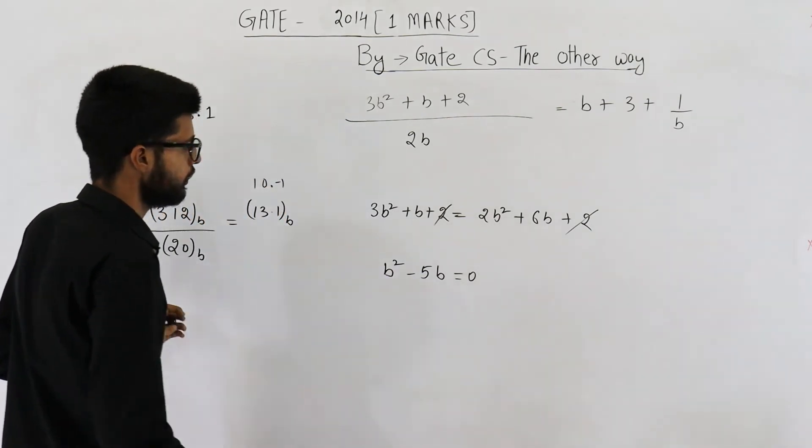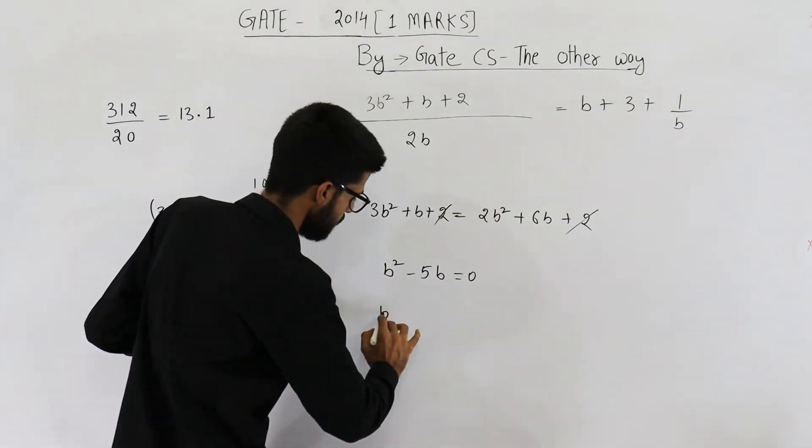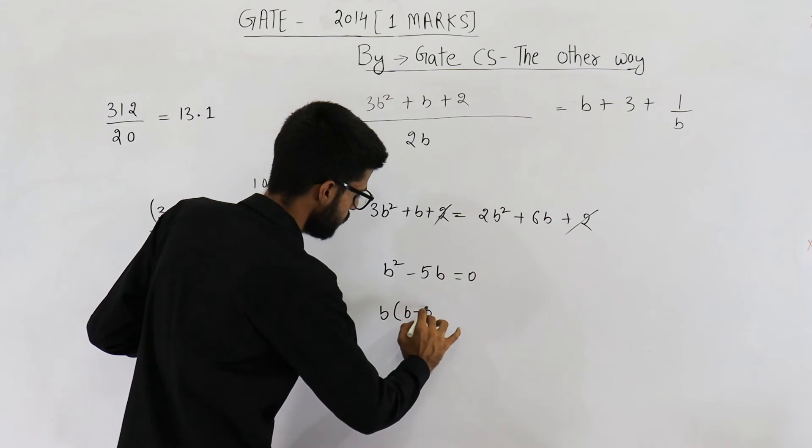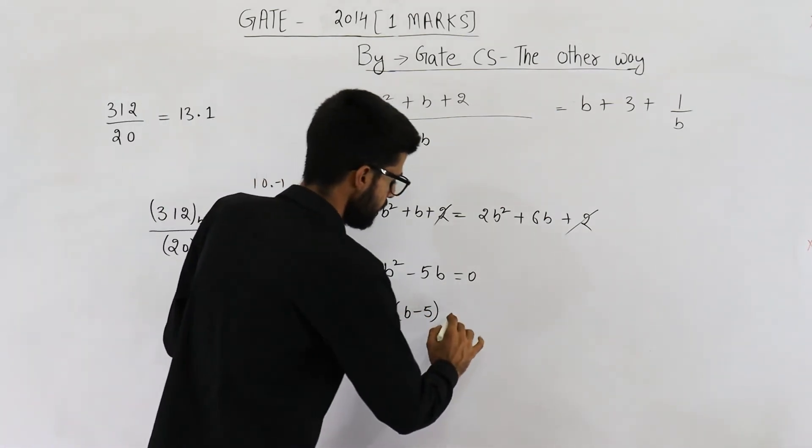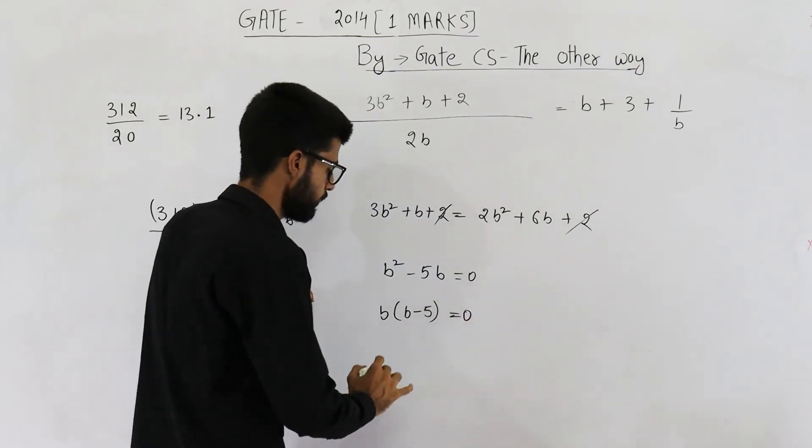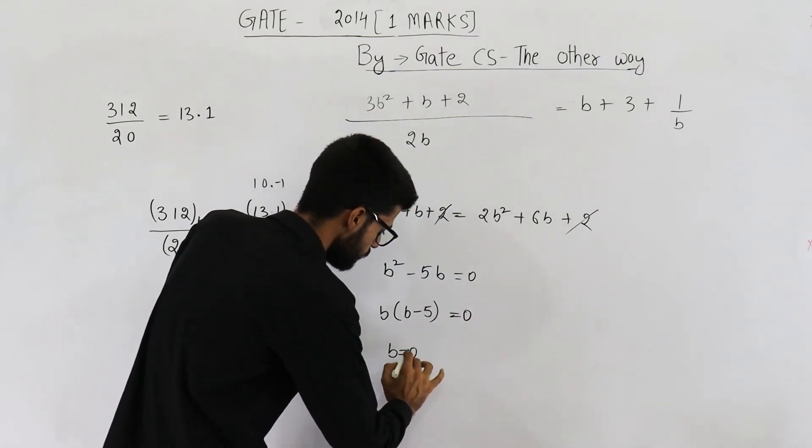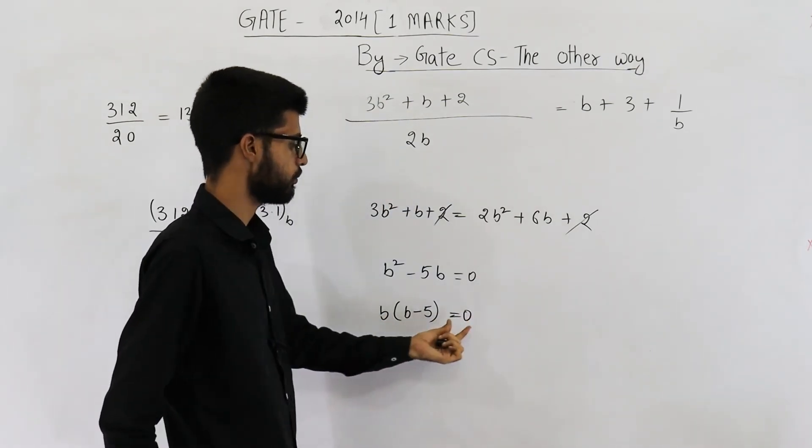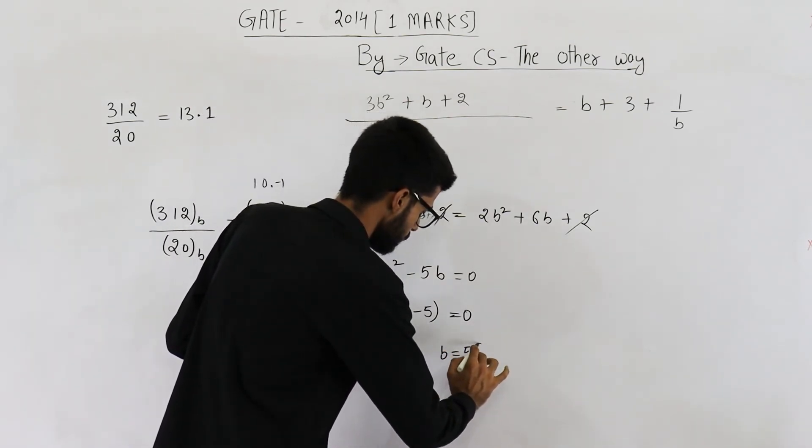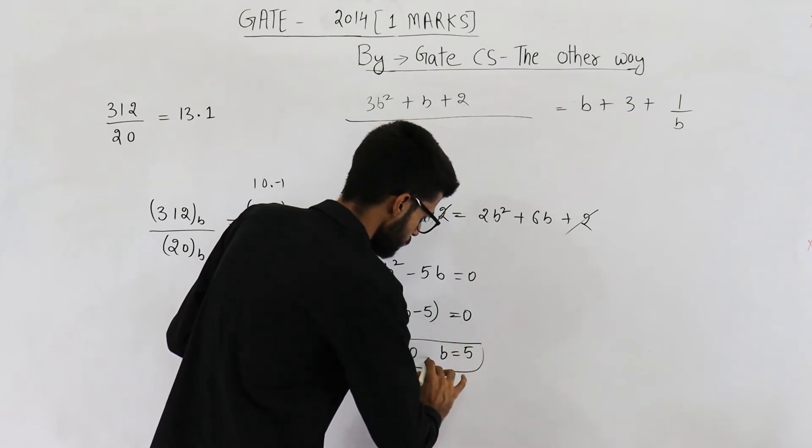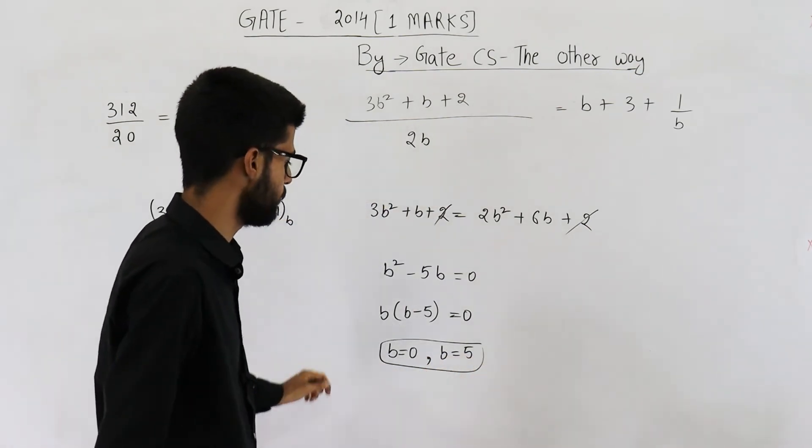Just solve this quadratic. So it can be written as b into b minus 5. We have just taken 1 b common is equal to 0. So value of b is either 0. If this one is 0 then b will be 0. If this one will be 0 then b is 5. So these are the two values of b.